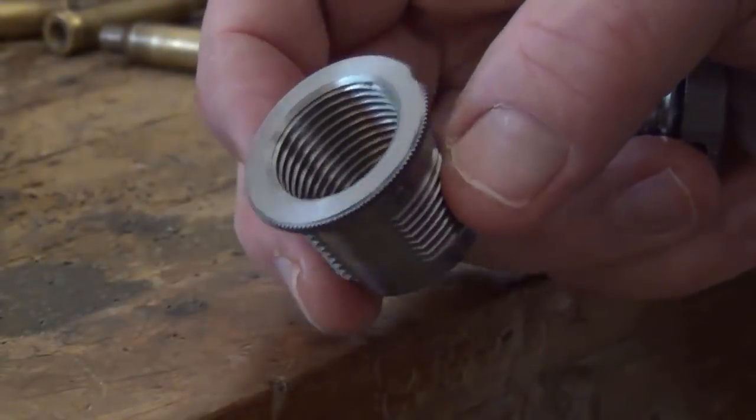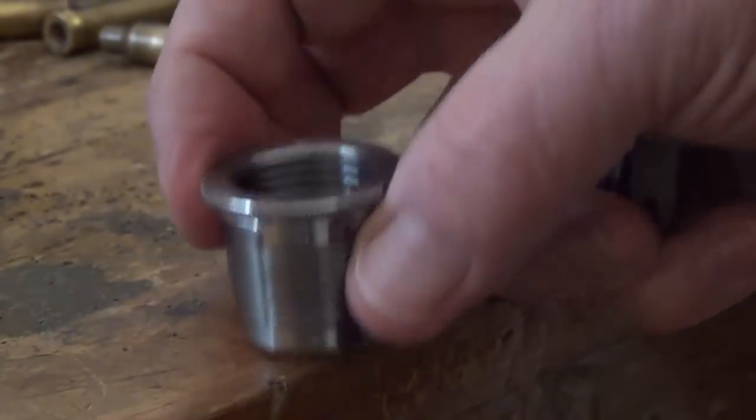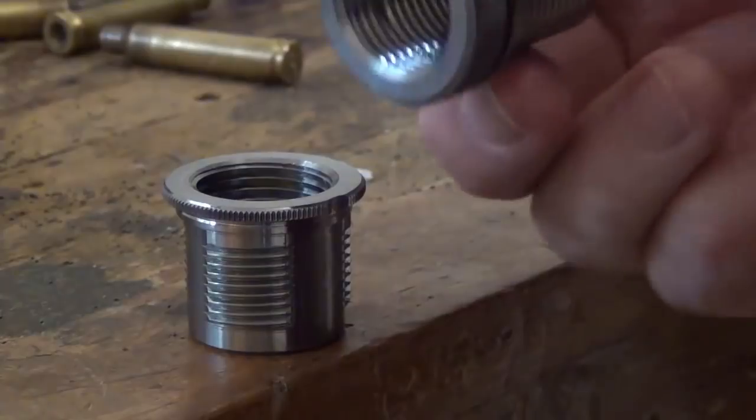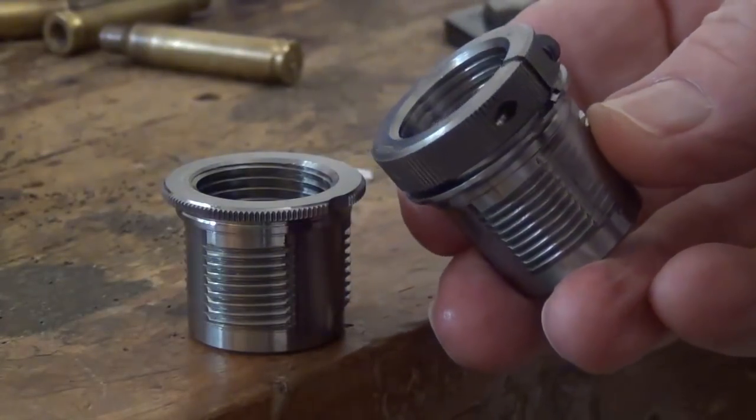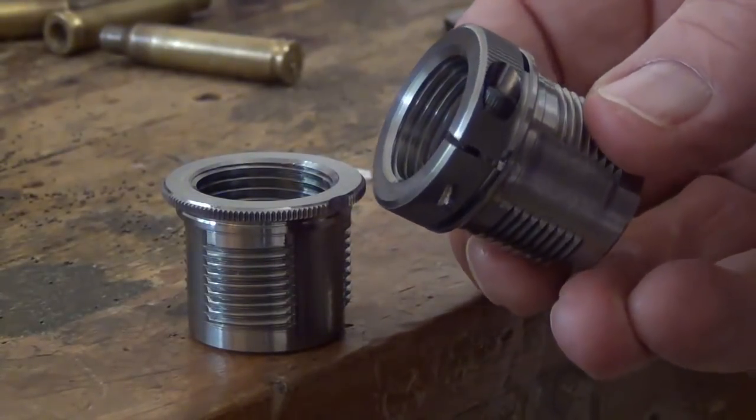The press comes with three quick change bushings, which are nice. And it also comes with one quick change bushing that has a lock ring built into it.